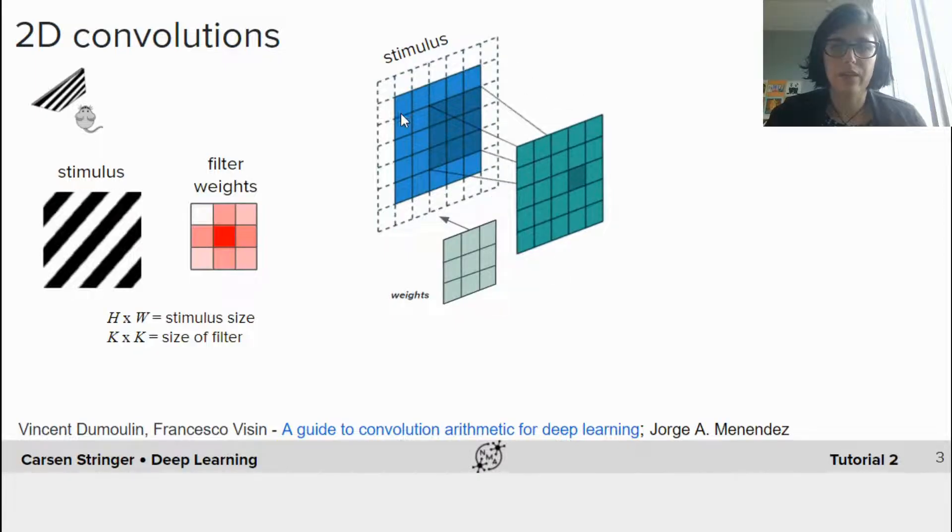So one thing to note, if you want to perform a convolution and get the same output size as the input size, you need to pad the input by half the filter size on each side. And we do this here. You can see this padding here. And in this case, the filter size is k by k, and k is 3. So our k divided by 2 is 1 here, and so we pad by 1.